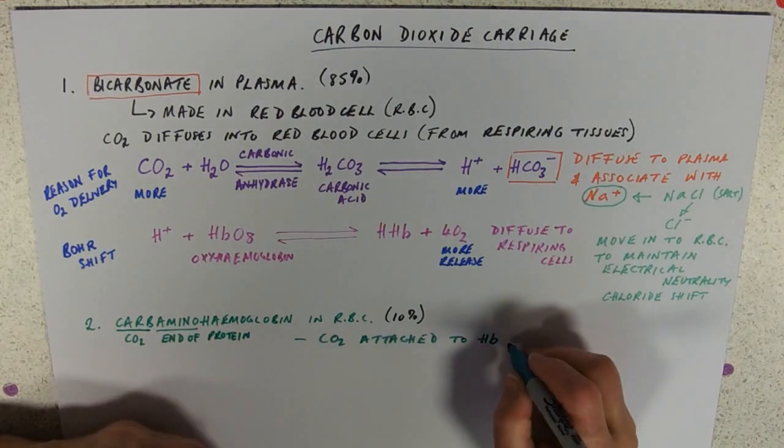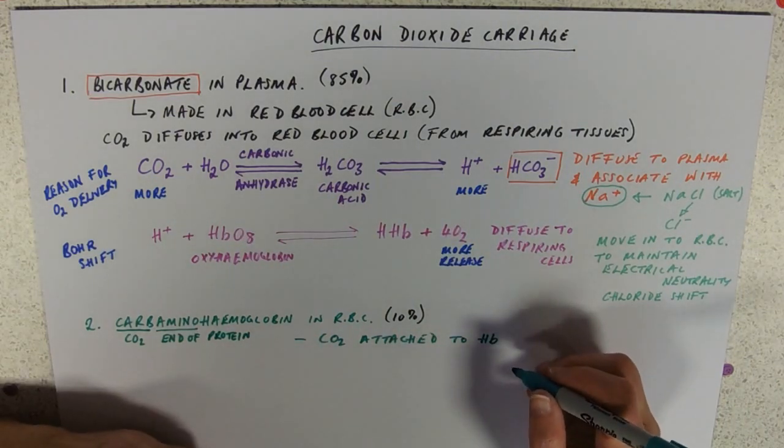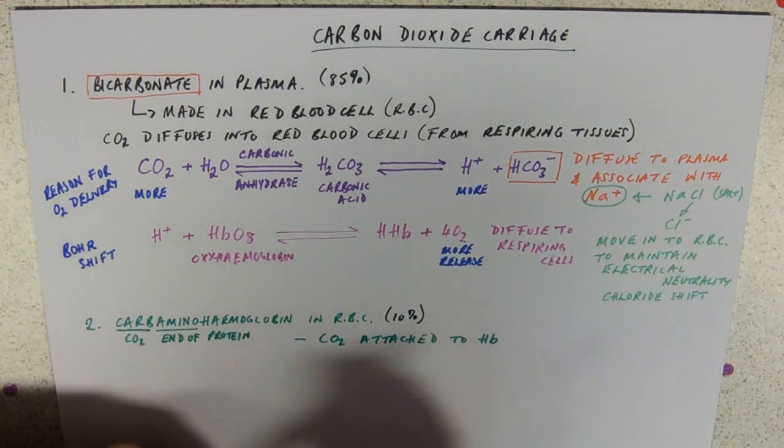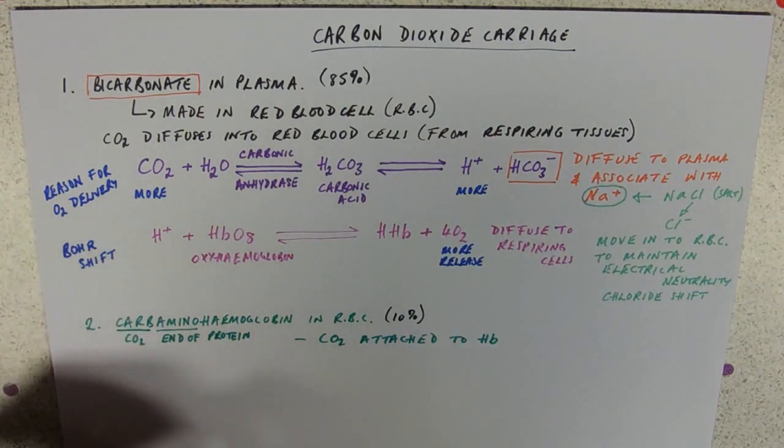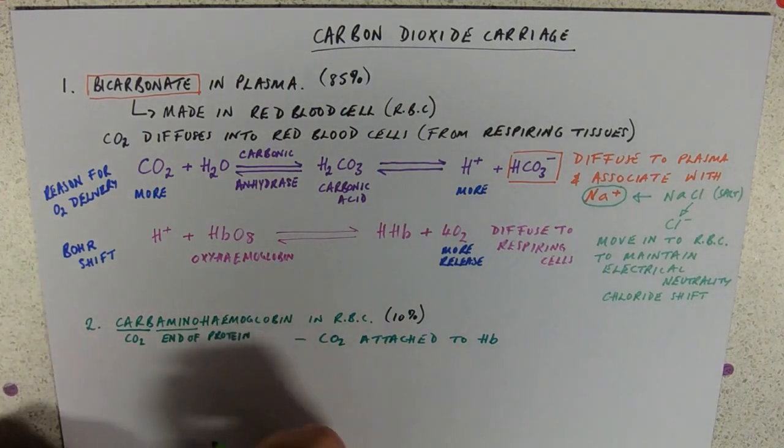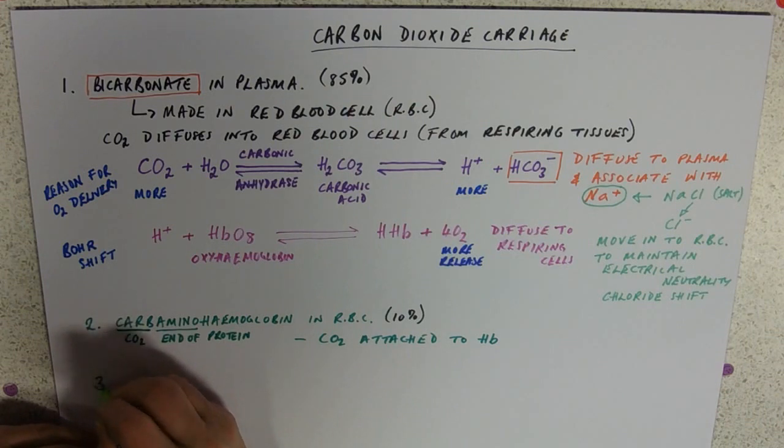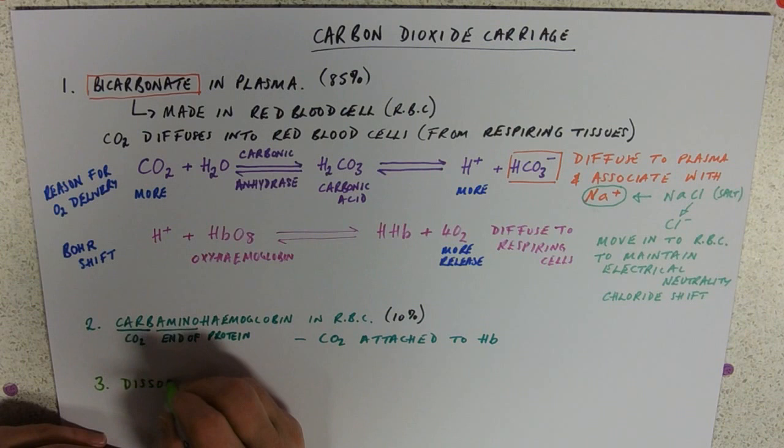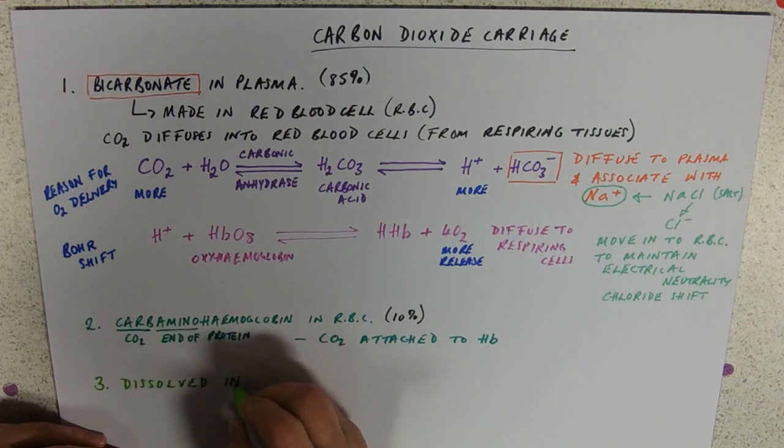And again, if carbon dioxide attaches to haemoglobin it's going to kick off a bit of oxygen there. So it's sort of in direct competition with oxygen for the haemoglobin. Just to keep on line with good old Khan Academy. And our third method is dissolved in plasma. So as it's diffusing across it is going to dissolve in some of it's going to dissolve in the watery bit of plasma.